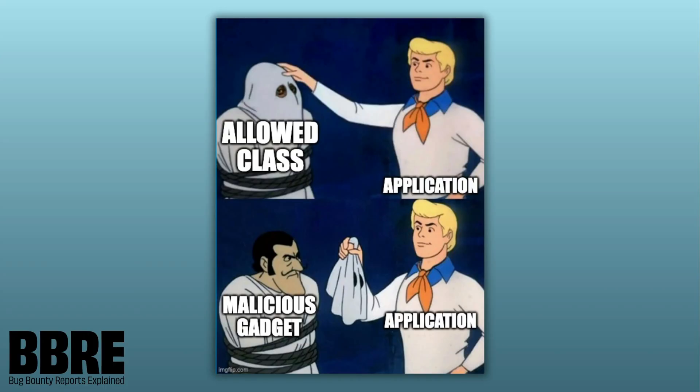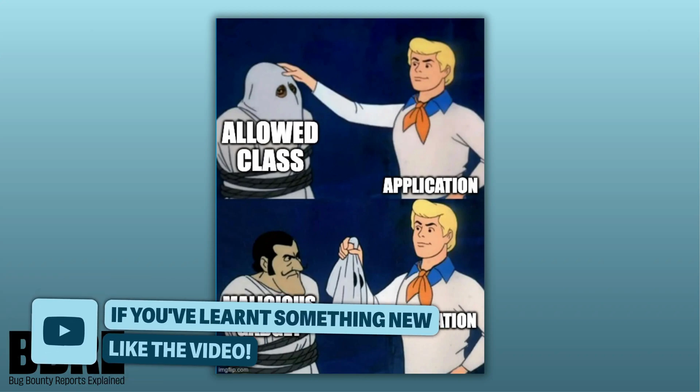The bypass works because the LookAhead method checks if the class is allowed or not for deserialization. You put the bypass class in front. When the LookAhead method checks, it sees this gadget is okay. But when the actual deserialization happens, you execute not the allowed class but the malicious gadget, and you can reach remote code execution.